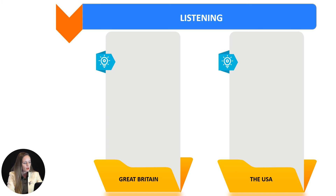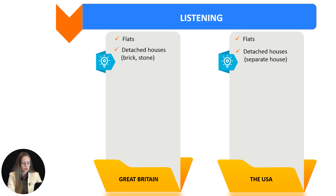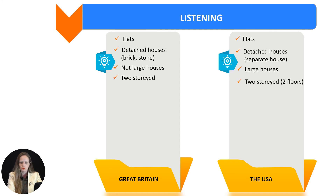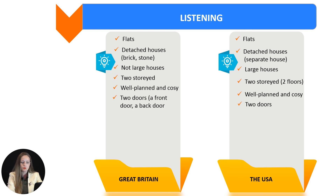Now together we will discover about British and American houses according to a text. A lot of families in Great Britain and the USA live in flats, but still a great number of people live in detached houses. They are usually built of brick and stone. As a matter of fact, British houses are not large but comfortable. Americans like to live in large houses. Most British as well as American houses are two-story. The houses are well planned and cozy.